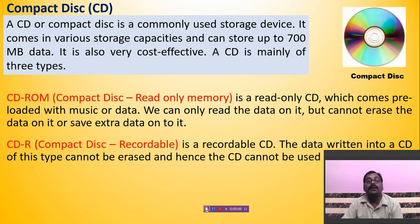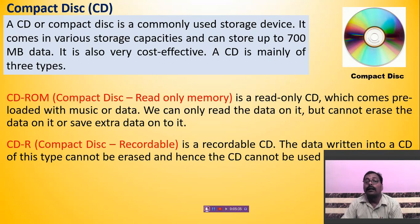The first type is CD-ROM, which means Compact Disk Read-Only Memory. By the name it is clear — it is a kind of CD from which you can only read the data. You cannot write data on it. It is a read-only CD which comes pre-loaded with music or data, and we can only read the data on it.